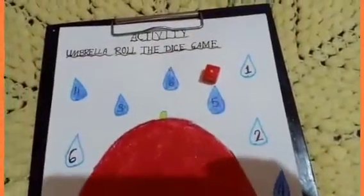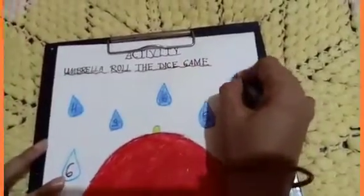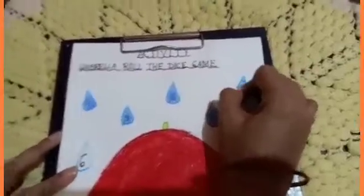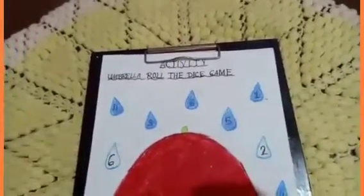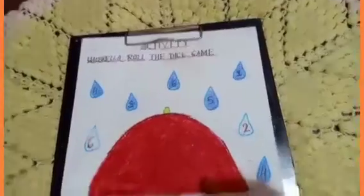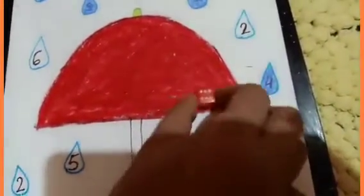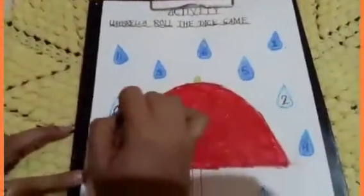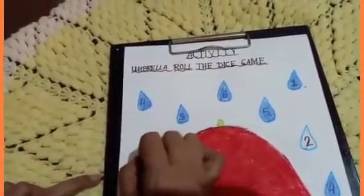Next, 1. Which number came? 1. So we will color 1. Next, 6. Which number came? 6. So let's color number 6. These are all raindrops.